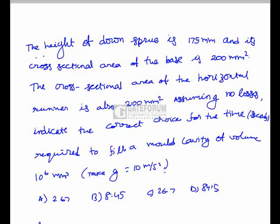The height of the downsprue is 175 mm and its cross-sectional area at the base is 200 mm². The cross-sectional area of the horizontal runner is also 200 mm². Assuming no losses, we need to find the time required to fill a mould cavity of volume 10.6 × 10⁶ mm³.